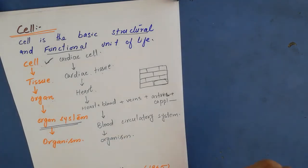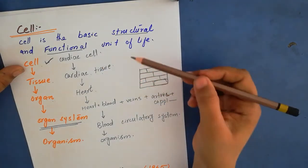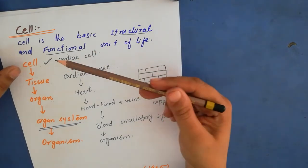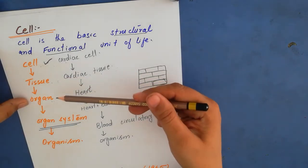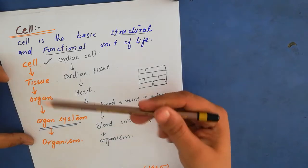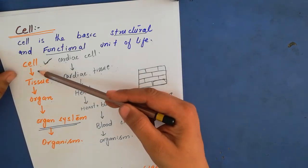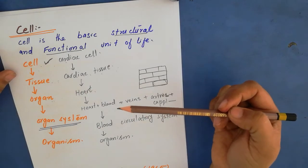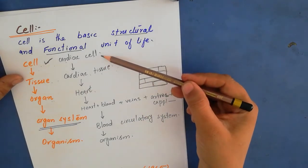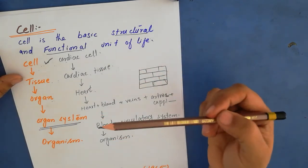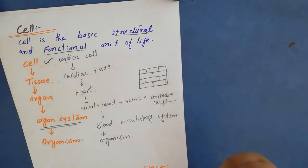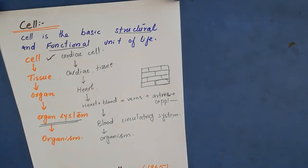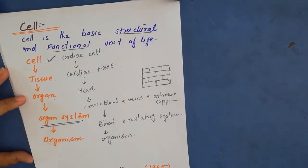Now you understand how a cell is the structural and functional unit of the body. Each and every part of the body is made up of cells. Cells combine to make tissue, tissues make organs, organs make organ systems, and then the organism. All cells are not similar — different cells have different shapes and are specific for their functions, such as cardiac cells, excretion cells, and digestion cells.